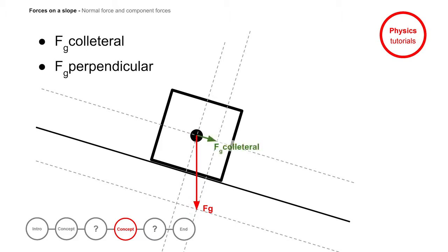The collateral gravity component force is an assisting force which helps the movement downhill. The perpendicular gravity component force is pushing you against the slope. The slope holds you up with a normal force which is equal but opposite to the perpendicular gravity component force.